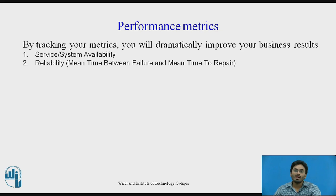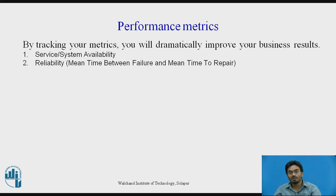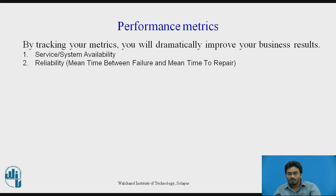The second metric is reliability, which can be measured by analyzing two values: Mean Time Between Failures (MTBF) and Mean Time To Repair (MTTR). For example, if we are analyzing the reliability of a server over one complete day — 24 hours — and the service was down from 11 p.m. to 11:15 p.m., that is a 15-minute outage.